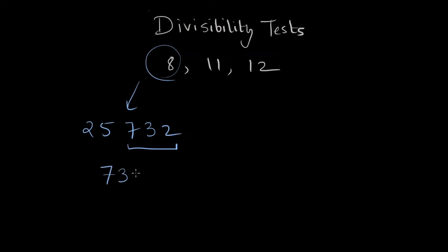If I test out whether 732 is divisible by 8, I find that there is a remainder of 4, and it's not completely divisible by 8. That's why 25,732 is not divisible by 8.